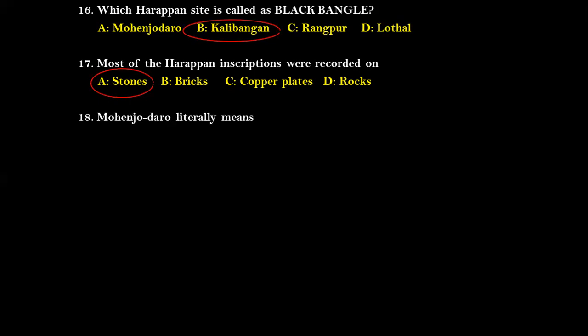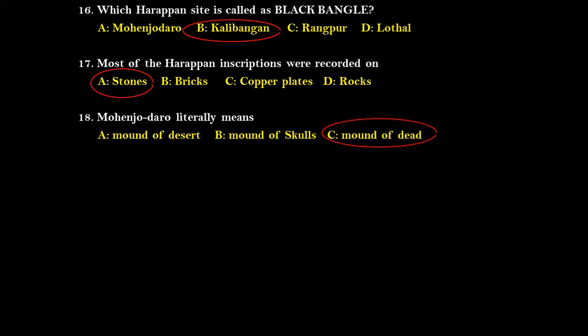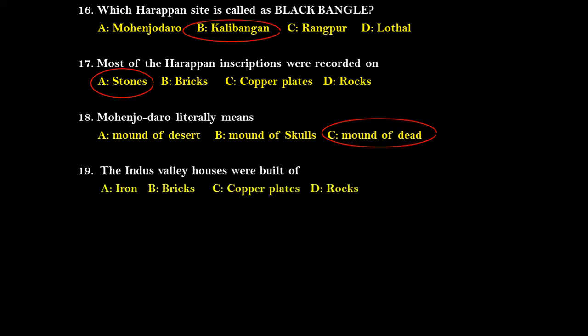Question eighteen: Mohenjo-Daro literally means mount of desert, mount of skulls, or mount of dead? The right answer is mount of dead, because during excavations many dead bodies and skeletons were discovered by archaeologists. Question nineteen: The Indus Valley houses were made of — the right answer is baked bricks.